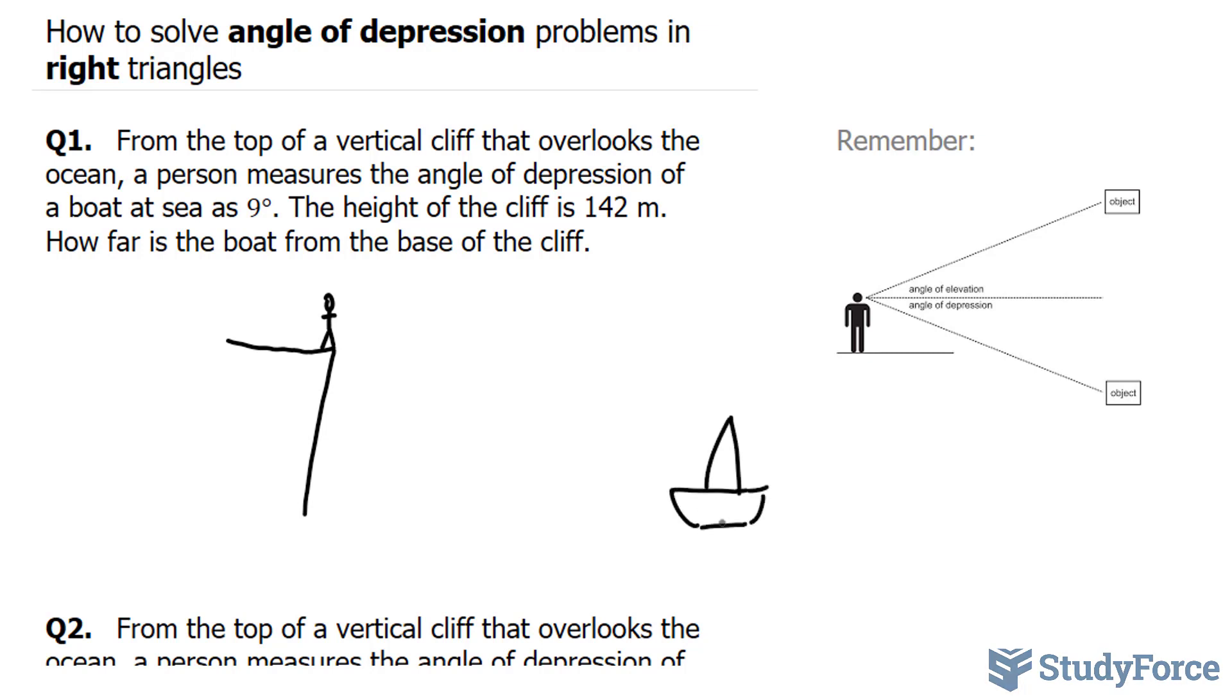And the angle of depression, this is a common word that students have a hard time with. Most students think of it as this angle. And let's pretend that this is a right triangle here. So most students will mistaken this as the 9 degrees here. But that's incorrect.